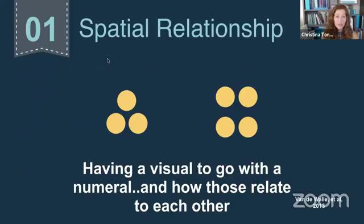So here's the first one. First one is spatial relationships. This goes along with subitizing, however you say it. But it's having a visual to go with a numeral. But it's not just having those visuals, but talking about how they relate. So I can have that visual of three and I can have that visual of four. But really, what does that tell me about three and about four? What kind of relationships can be built once we have those visual pictures?